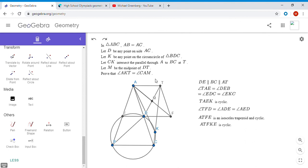Okay, so ATFKE is cyclic. How did we originally say that would solve our problem? We want to show that AKT equals CAM. So let's do an angle chase. We have angle AKT, but TF is parallel to AC, so angle AFT is the same as angle DAM. And angle DAM is equal to angle CAM, and that solves the problem.